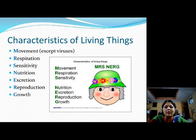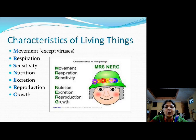The third characteristic is sensitivity. All of us are sensitive to environmental changes. Plants are also responding to stimuli or sensitive to environmental changes. One example is the touch-me-not plant — when you touch the leaves of the touch-me-not plant, they fold up because they are showing a response to stimuli. In the case of animals also, they are showing the response to stimuli — for example, when a car is coming in front of us, we change our position. That is we are responding to stimuli; we are sensitive to environmental changes.